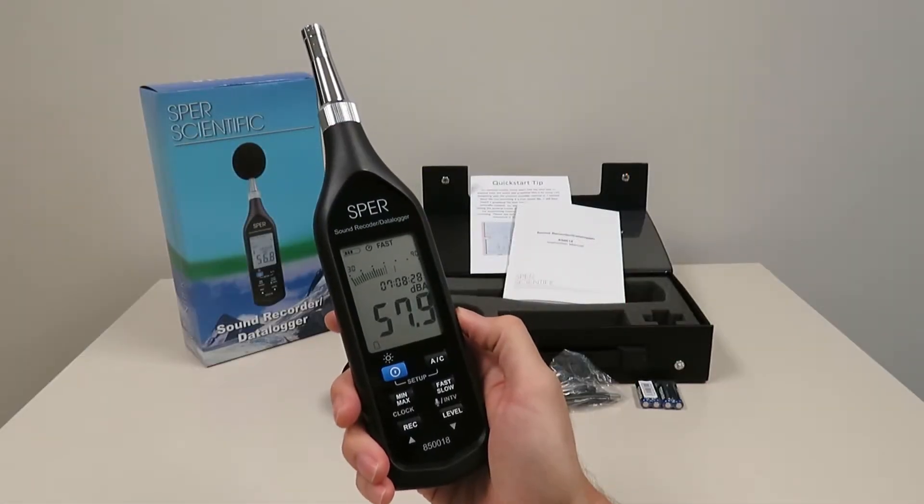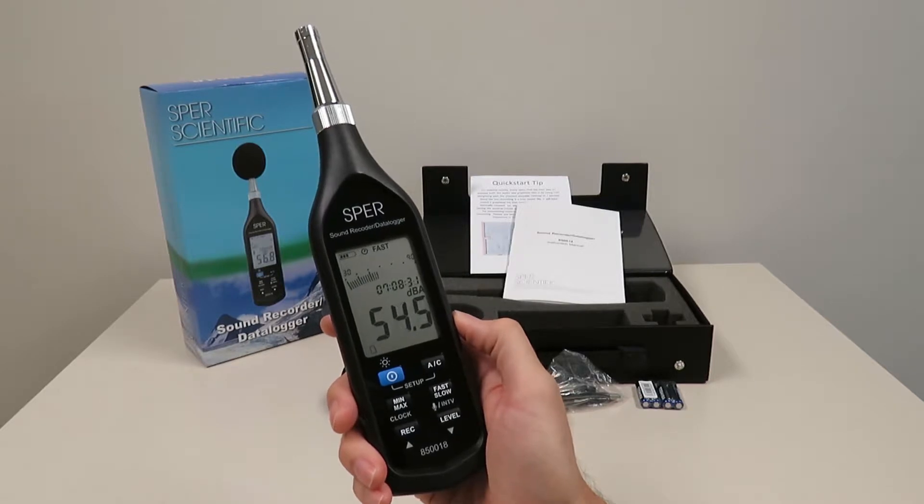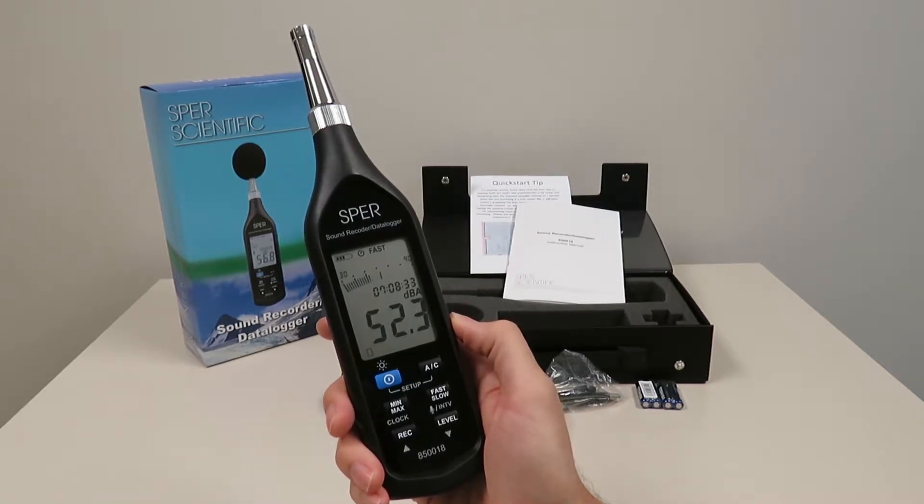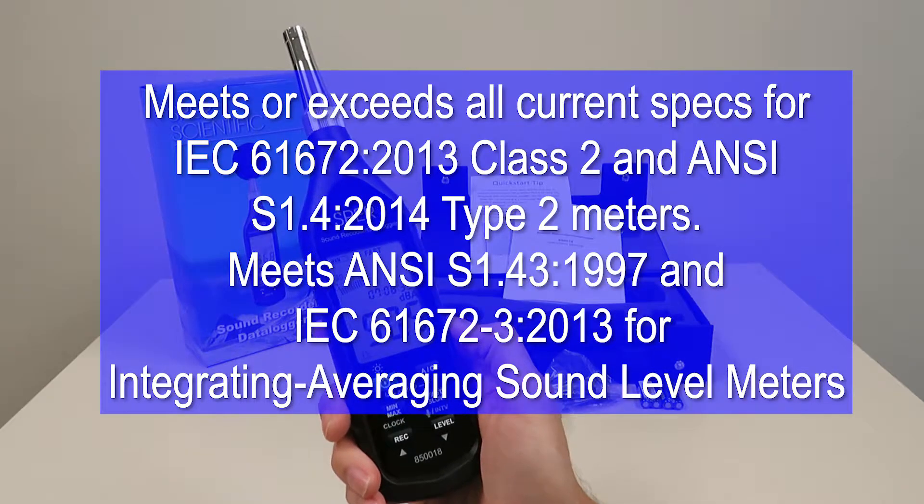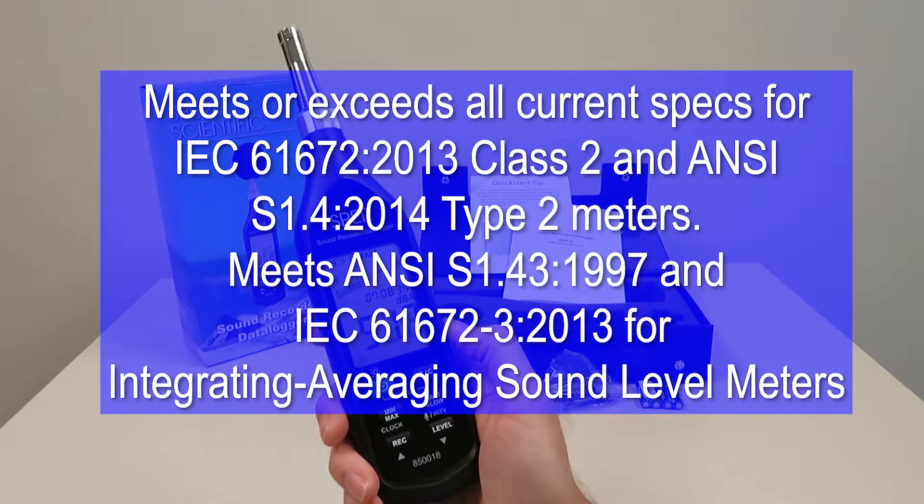Accurate within plus or minus one decibel, this sound meter meets or exceeds all current specs for the following IEC and ANSI standards for class 2 and type 2 meters and for integrating averaging sound level meters.